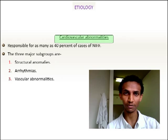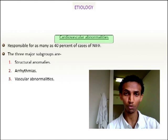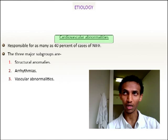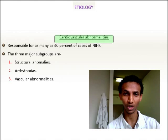Describing some of the etiologies: the first common cause of non-immune hydrops fetalis is cardiovascular anomalies. These can be structural, including atrial septal defects and endocardial cushion defects.